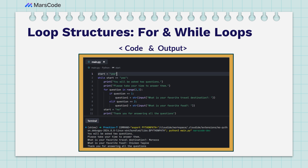Here's a code and output example combining the for loop and while loop. On line one, there's a variable called start with a value of 'yes'. On line two, it says 'while start == yes' — so as long as start equals yes, we execute the while block, which prints: 'You will be asked two questions' and 'Please take your time to answer them.' Then we have a for loop inside.